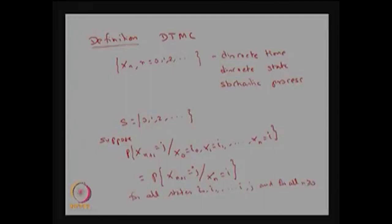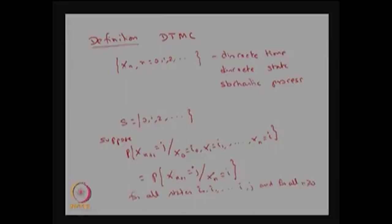If this property is satisfied for all states i0, i1, ..., i, j as well as for all n greater than or equal to 0, then this stochastic process — that is, a discrete time discrete state stochastic process — is known as a discrete time Markov chain. This is the Markov property, and it must be satisfied by all states as well as all random variables.